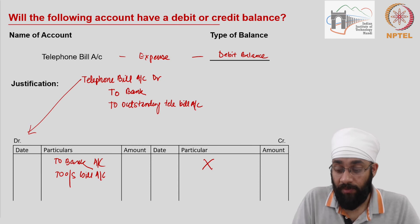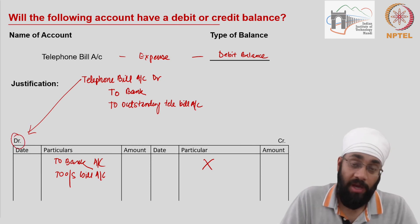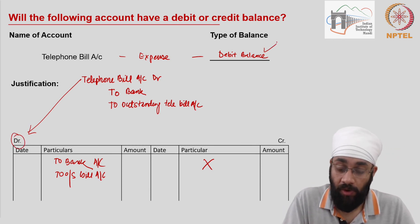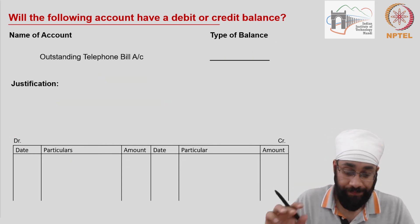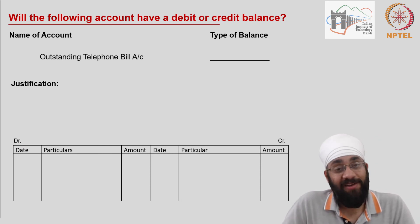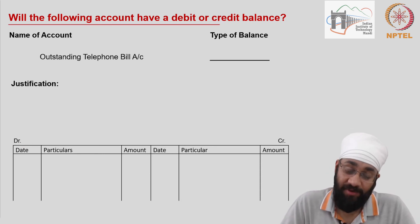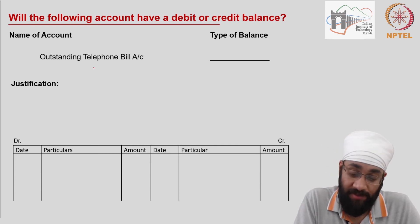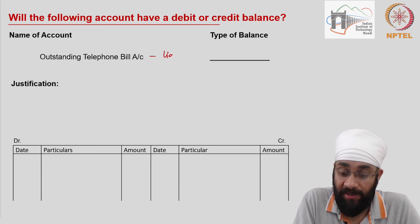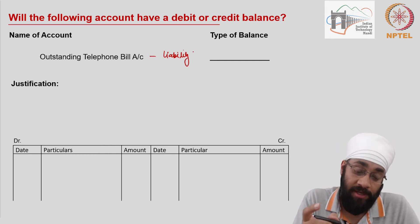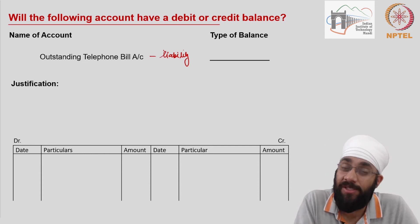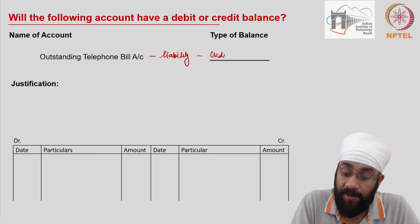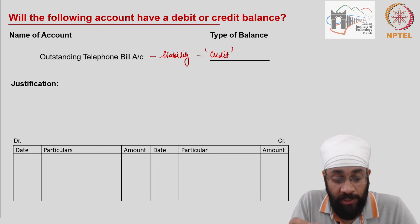There is no posting on the credit side of the telephone bill account — it always has a debit balance, confirming all expenses have a debit balance. Outstanding telephone bill account is different — it is a liability. Outstanding expenses are liabilities, and liabilities always have a credit balance. Do not confuse telephone expenses account with outstanding telephone expenses account — they are two different things.